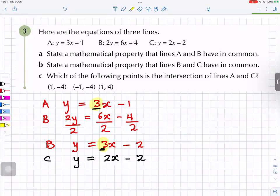And the gradient is three. So A and B same gradient. The symbol for gradient is m, so m equals 3.